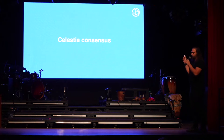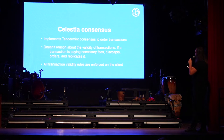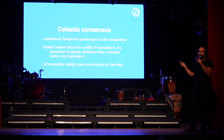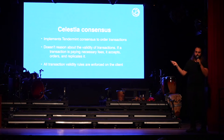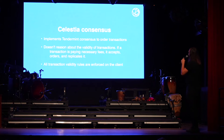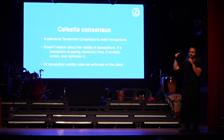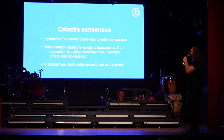Let's talk about the consensus side of Celestia. We implement Tendermint, as found in the Cosmos ecosystem. We don't reason about the validity of transactions - we don't care if your transaction is valid or invalid. That's up to the settlement layer and the execution environment to verify the transaction. Validity rules are enforced by the client.